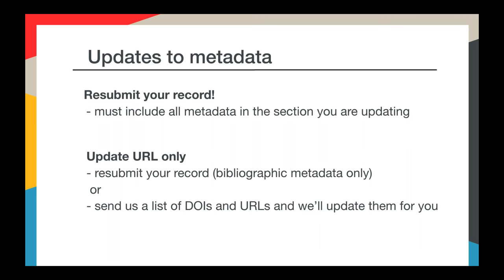URLs are a little bit special. You can update your URLs by resubmitting the bibliographic portion of your metadata record, or you can send us a list of DOIs and URLs and we'll update them for you. We encourage you to update them as often as you need to. You can just dump that into a tab-separated text file and email it to support@crossref.org.